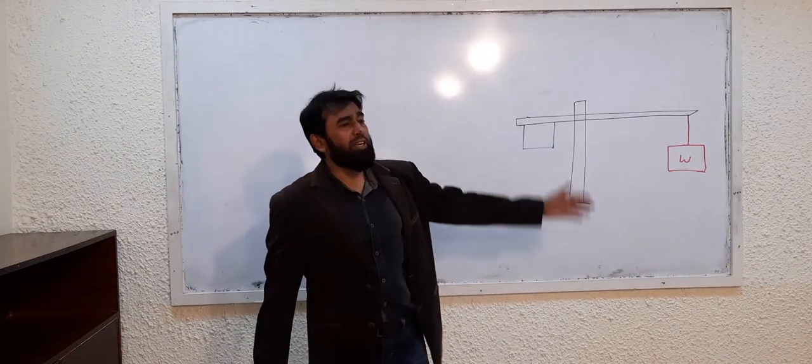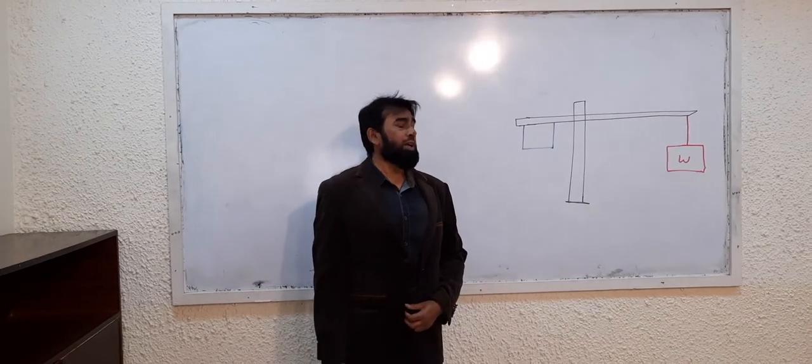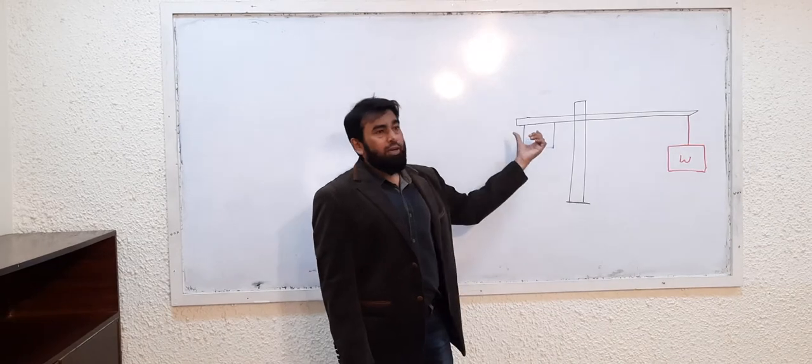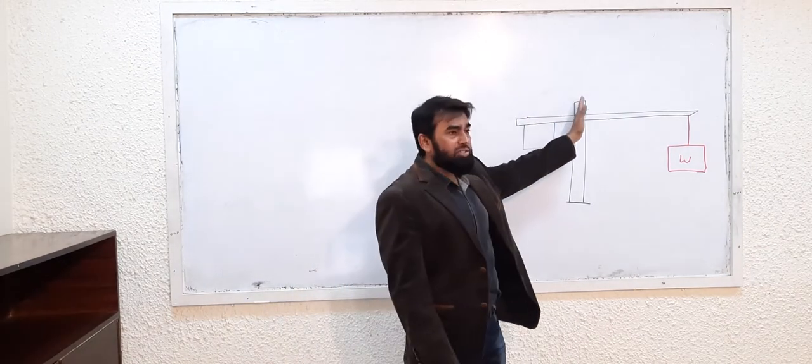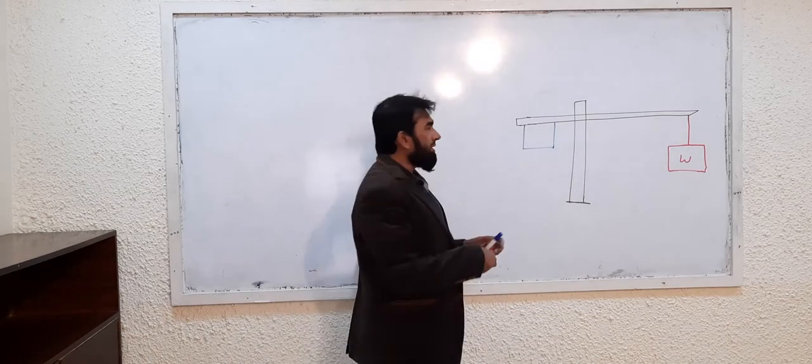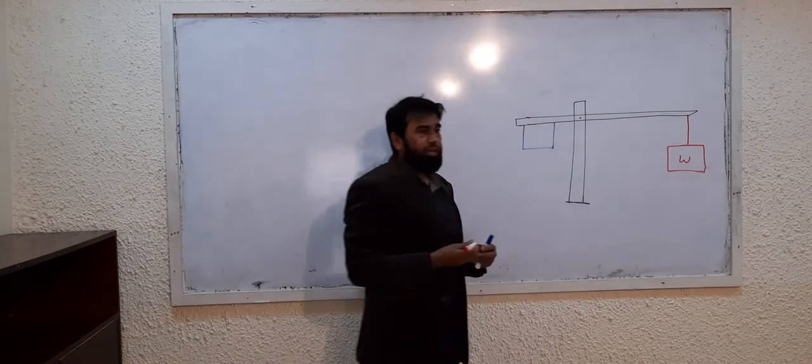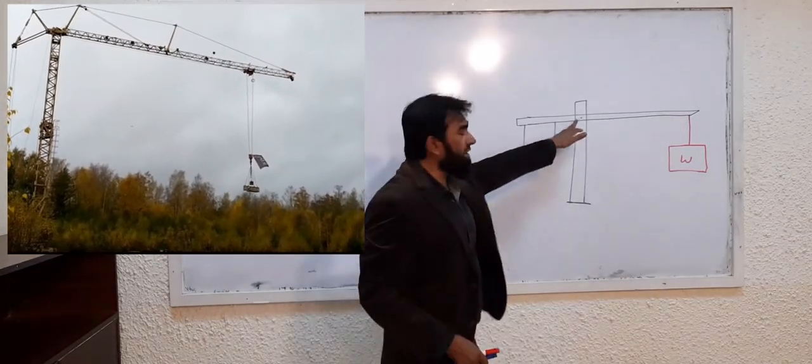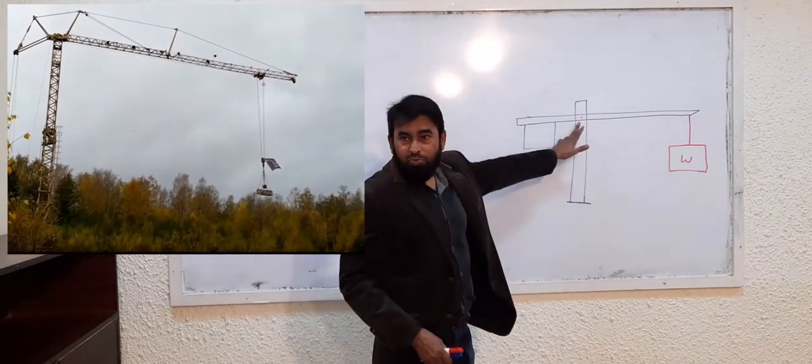So basically by adjusting this counterweight, the center of mass or center of gravity is adjusted. The pivot should be here while lifting the weight from the other side. The pivot must be adjusted here; the center of gravity must be here.